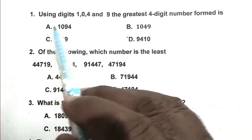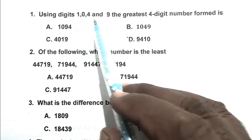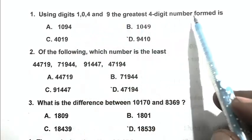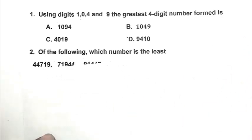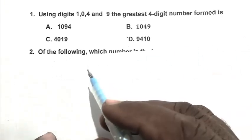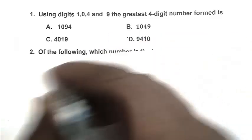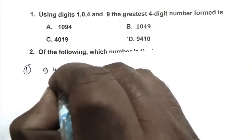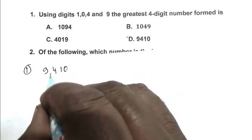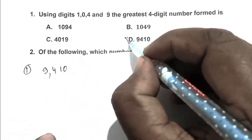Question number one: using digits 1, 0, 4, and 9, the greatest four-digit number formed is. So friend, we have to calculate the greatest four-digit number, so we write the greatest digit first. So first 9, after that 4, after that 1, after that 0. So 9410, D is the right answer.